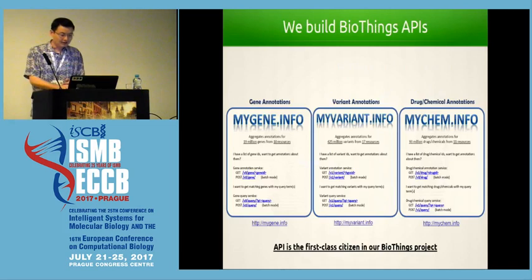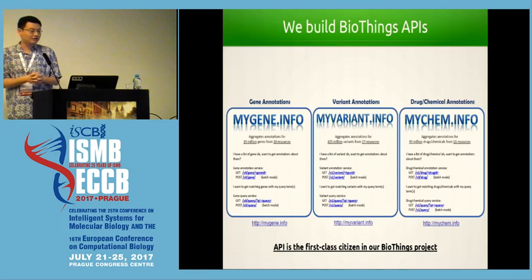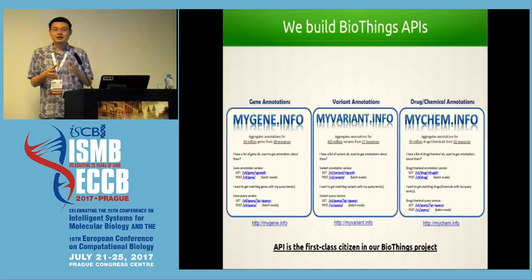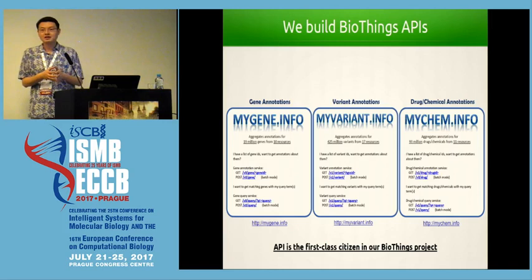In the past we have built a collection of so-called Biothings APIs. For example, mygene.info, myvariant.info, and recently we released mycan.info. All of these provide aggregated annotations about genes, variants, and drug chemicals, so you can use these robust APIs to build your applications without repeating that work.